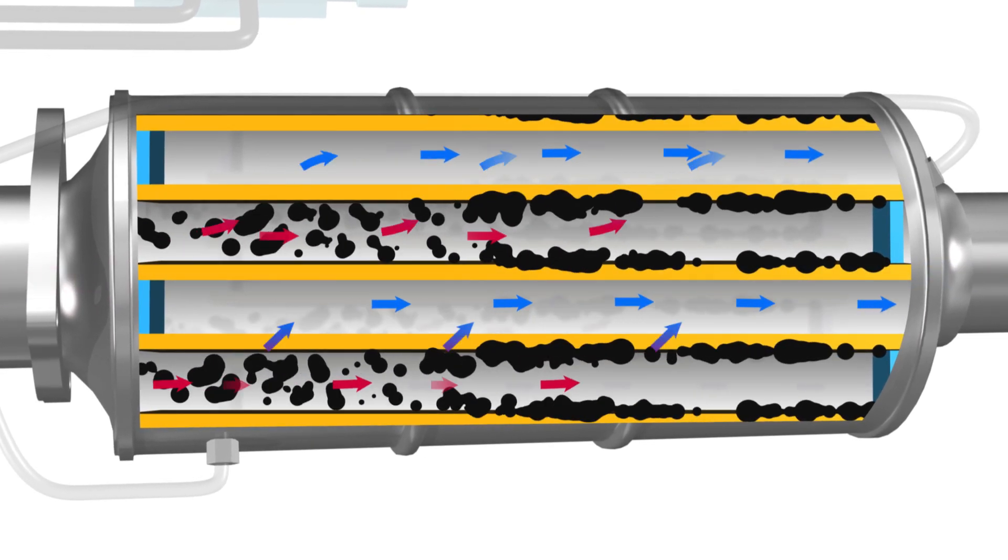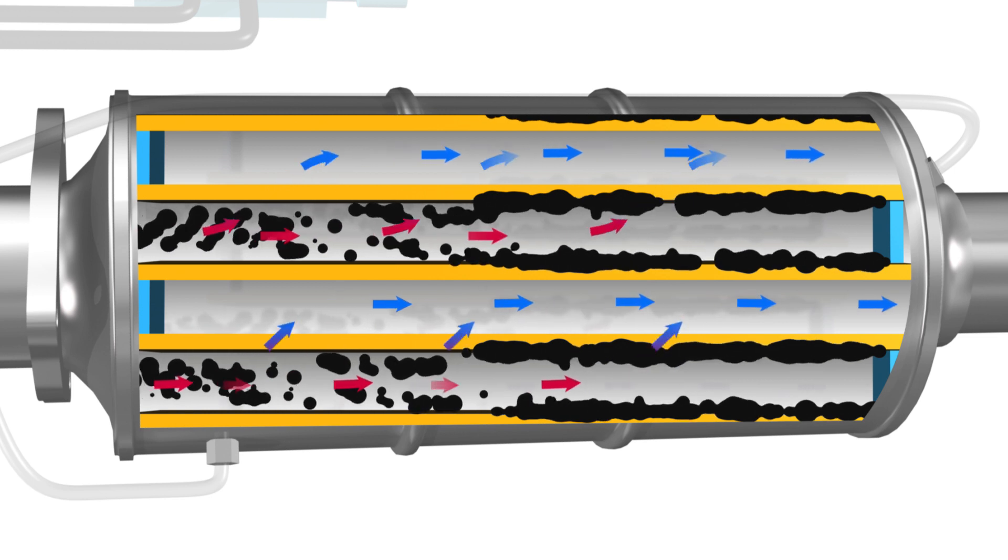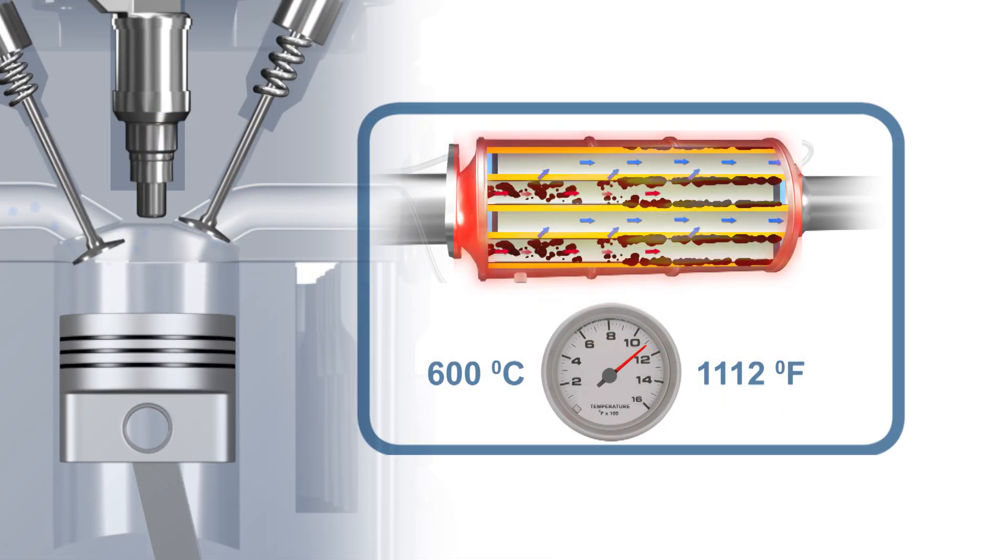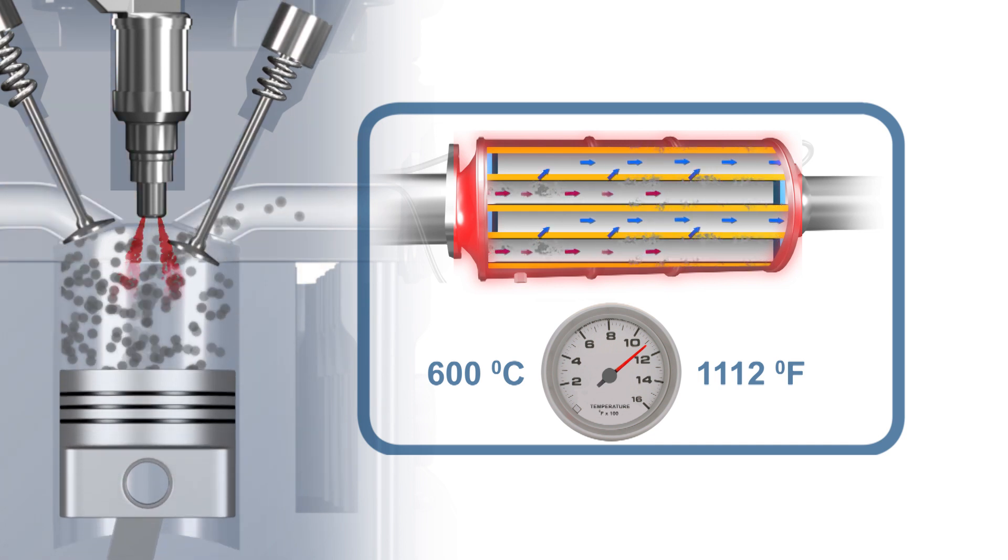The particulates are removed by a regeneration process which incinerates the particles. Regeneration is controlled by the temperature of the exhaust gases within the DPF.